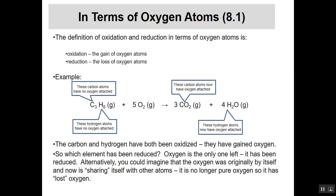If you look at the boxes above the reaction, they focus on the carbon atoms. The carbon atoms in C3H8 have no oxygen attached to start with, but on the other side of the arrow those carbon atoms now have oxygen attached — so the carbons have been oxidized. Similarly, the hydrogen atoms start with no oxygen, and on the other side end up with oxygen attached, so they've been oxidized as well.